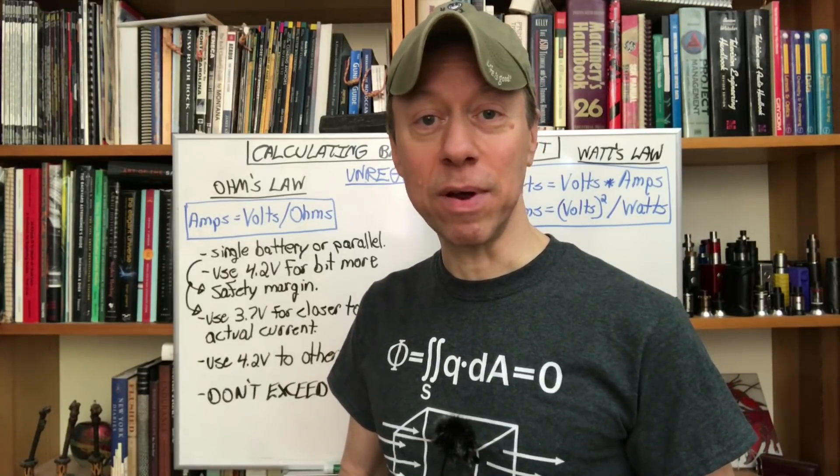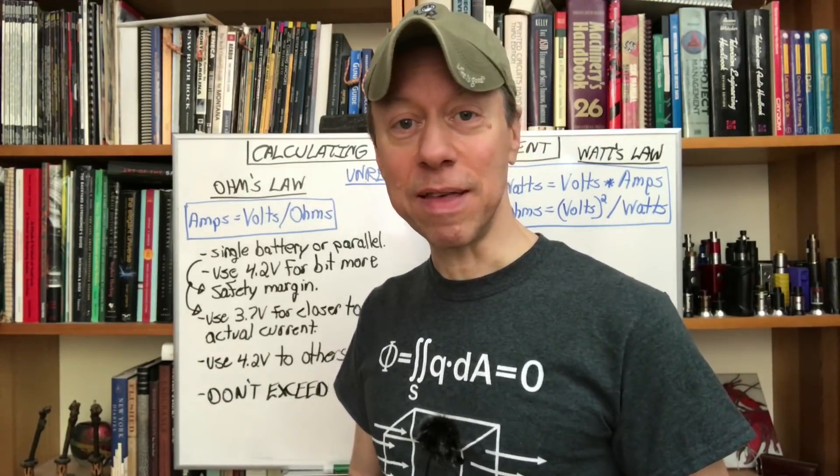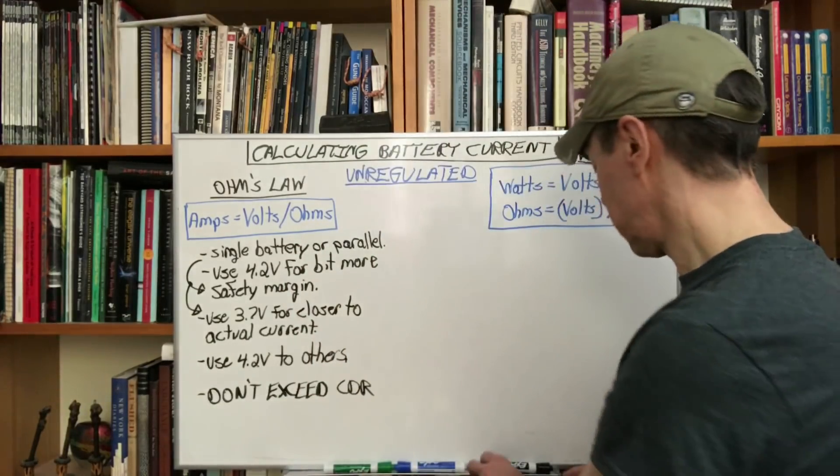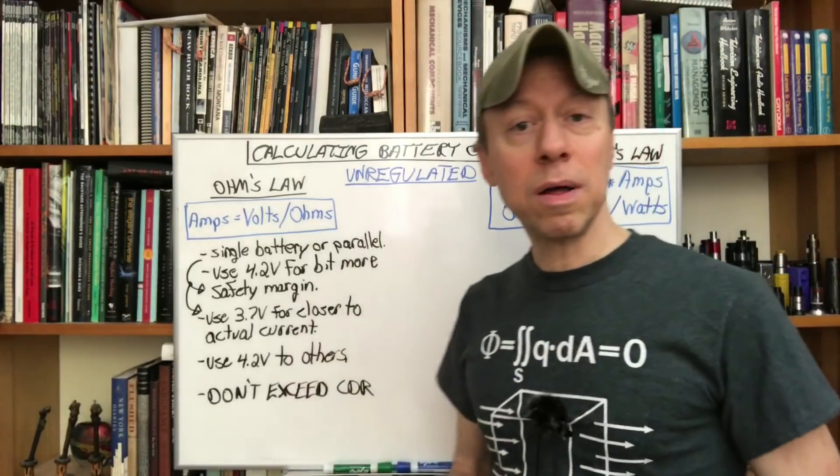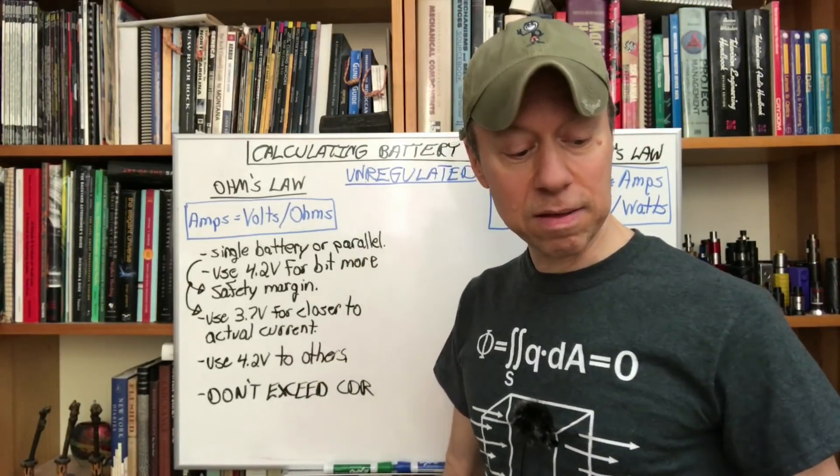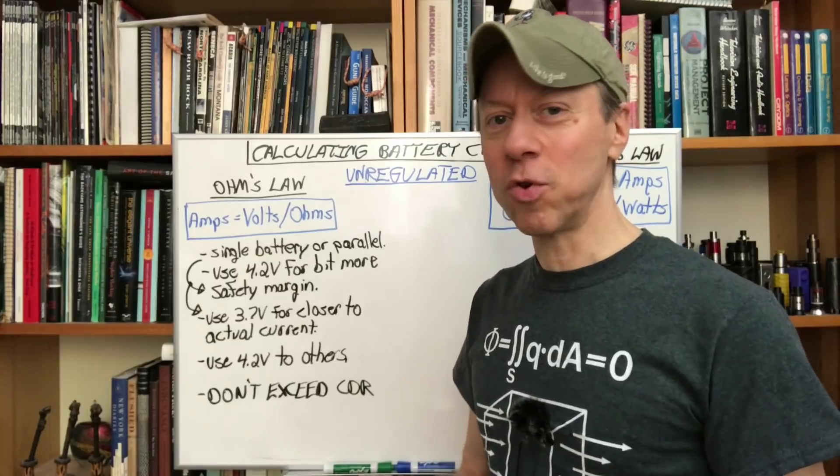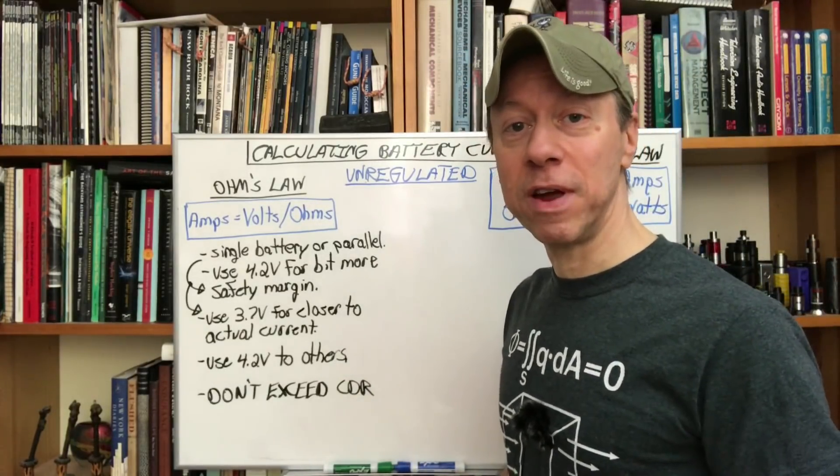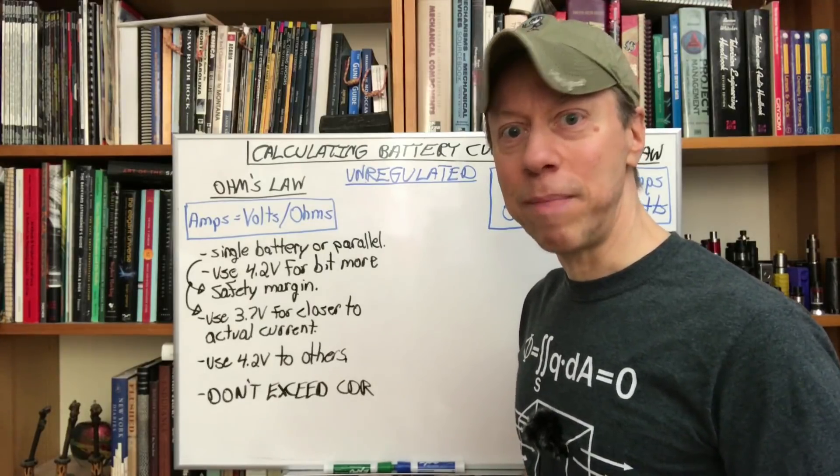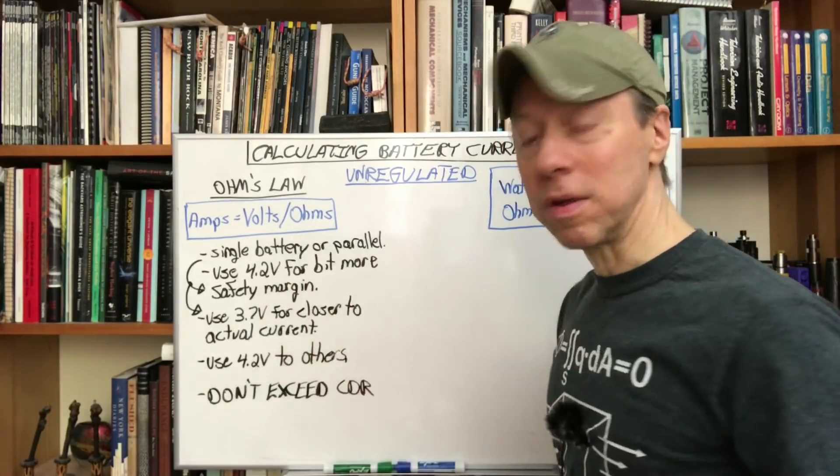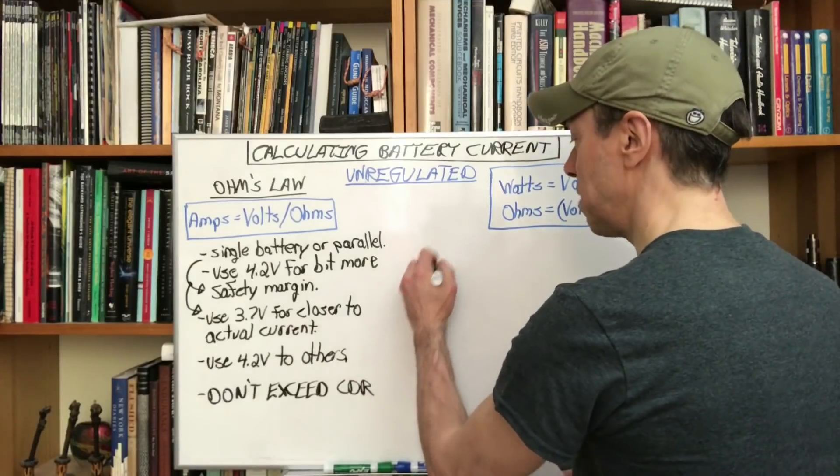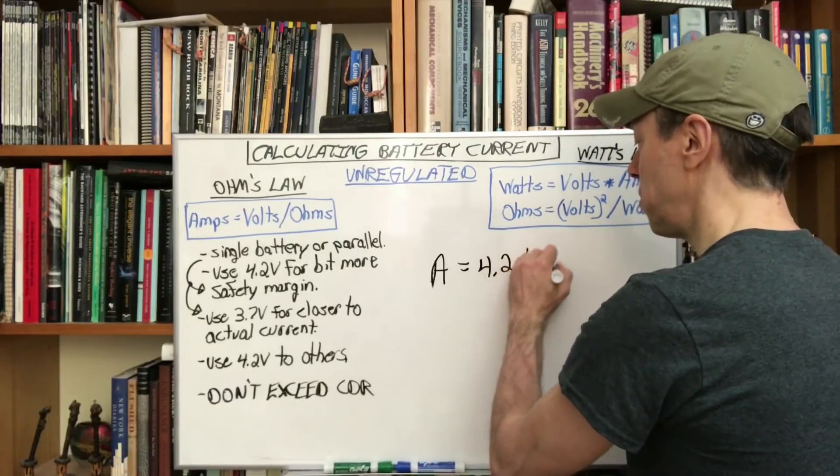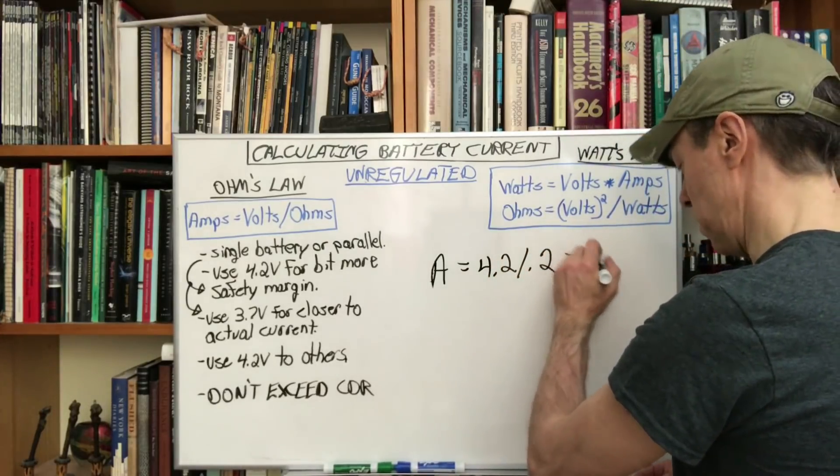If we pick an example here for Ohm's law, let's say we've got a 0.2 ohm coil that you'd like to use and you want to figure out how hard am I running that battery. You're just going to use this equation. Amps equals 4.2 divided by 0.2 and that equals 21 amps.